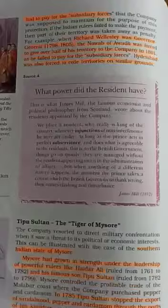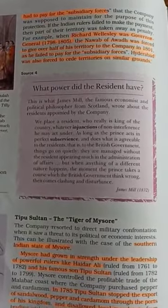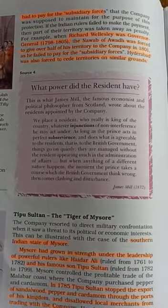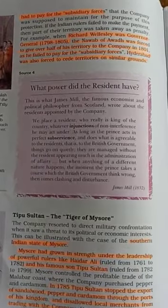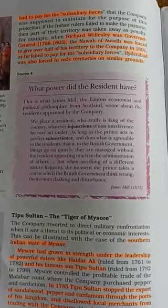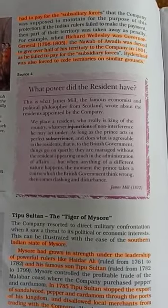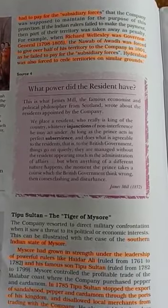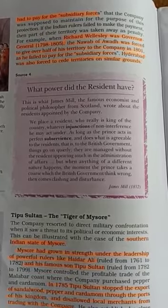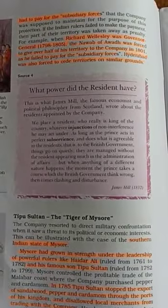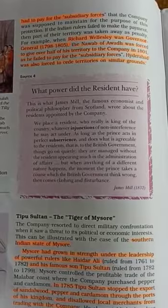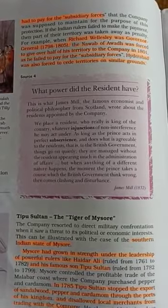Indian rulers were forced to keep the Company's army. For example, in 1801, the Nawab of Awadh and the ruler of Hyderabad gave over half of their territory to the Company.